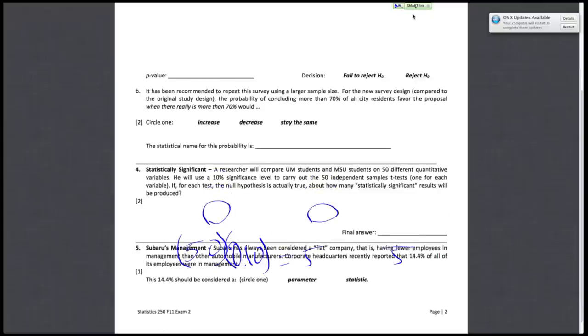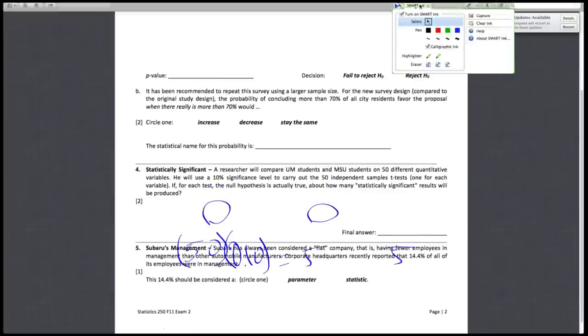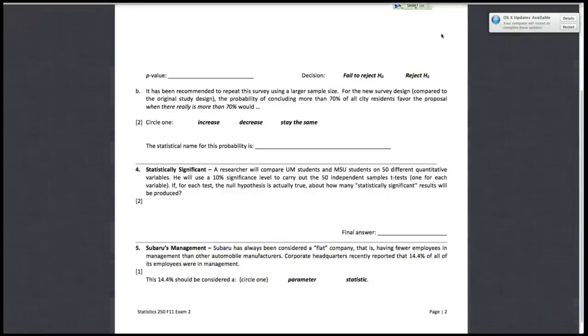So lastly, question 5. Subaru has always been considered a flat company, that is having fewer employees in management than other automobile manufacturers. Corporate headquarters recently reported that 14.4% of all of its employees were in management. So this number, 14.4%, would be considered a parameter or a statistic. So you have two options: parameter and statistic.